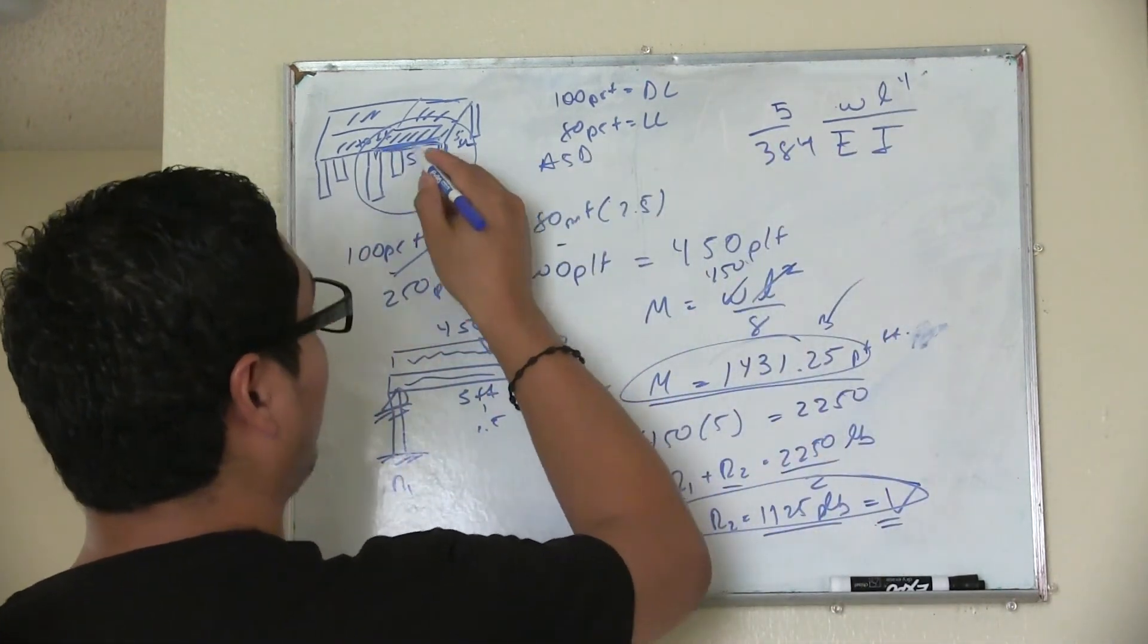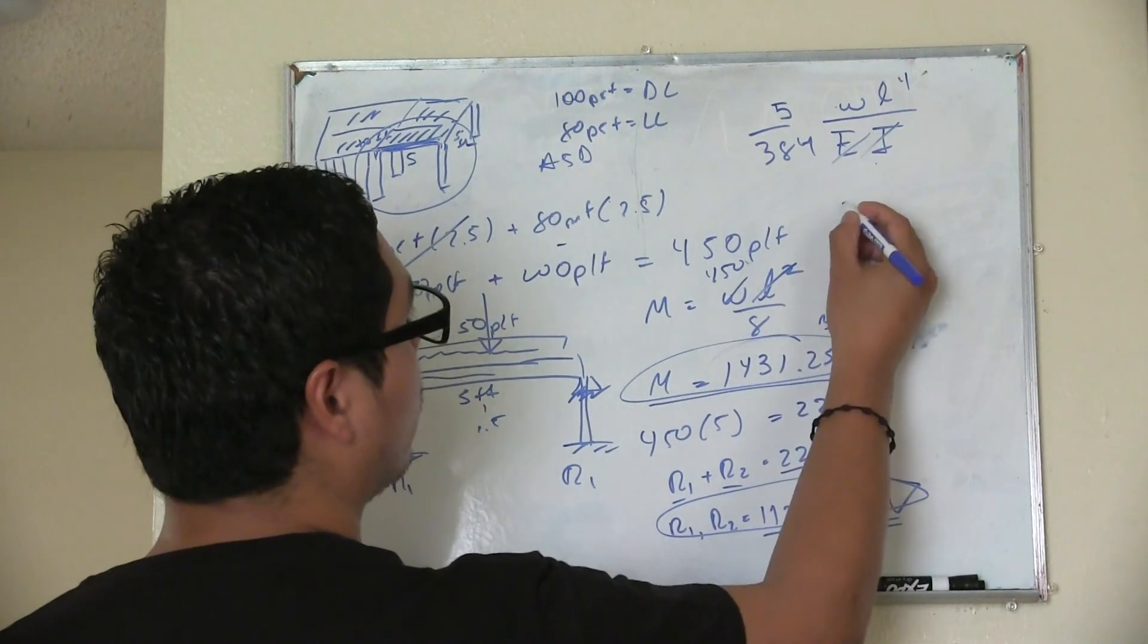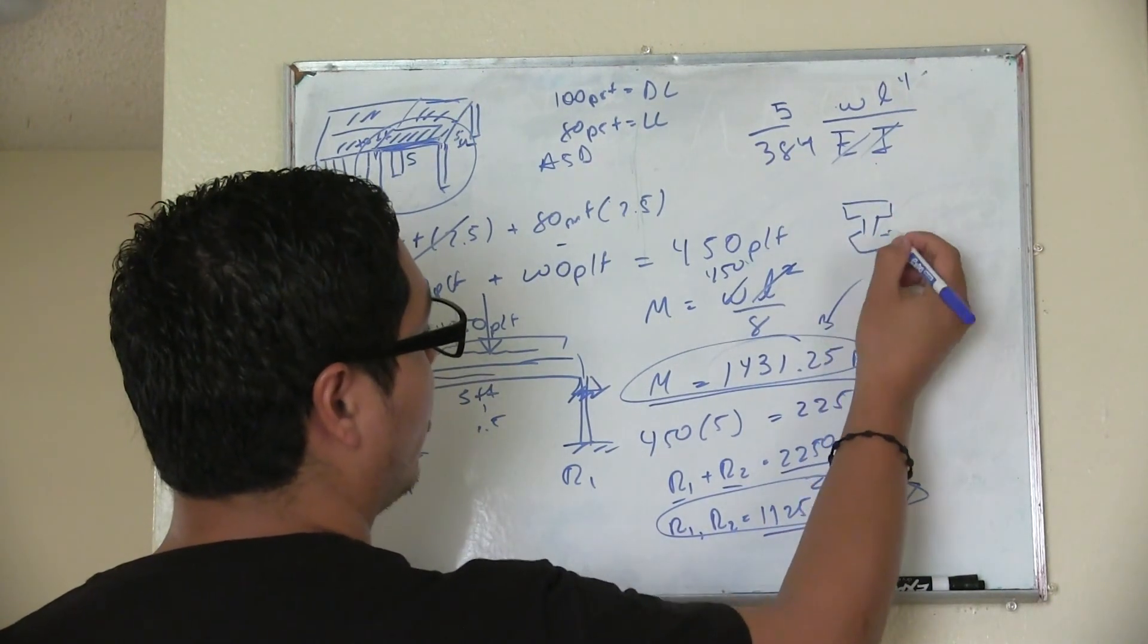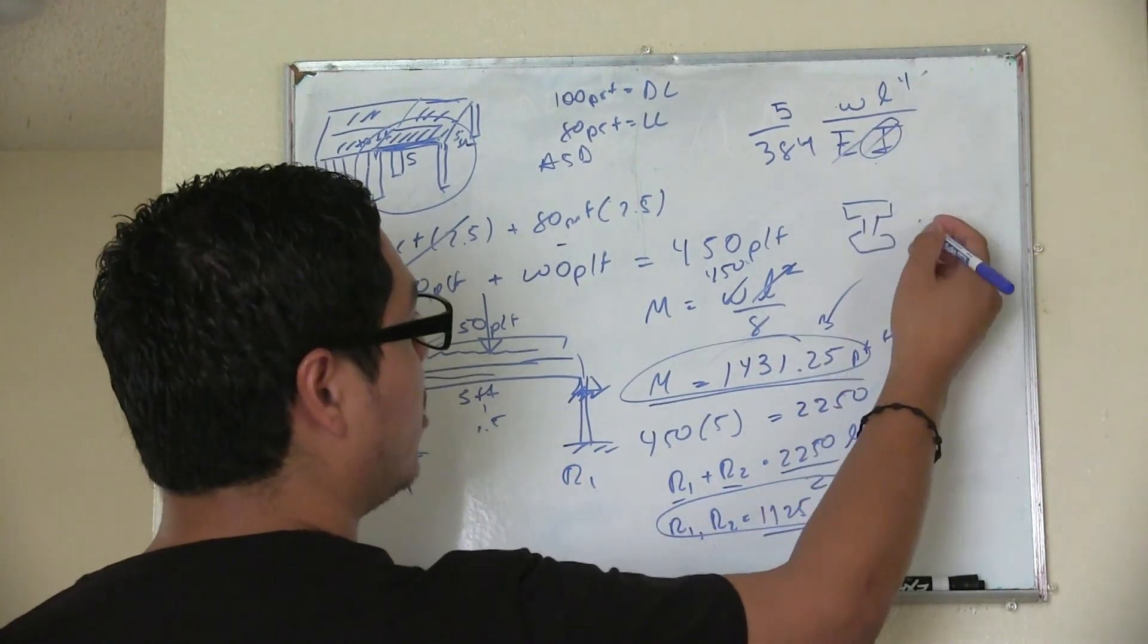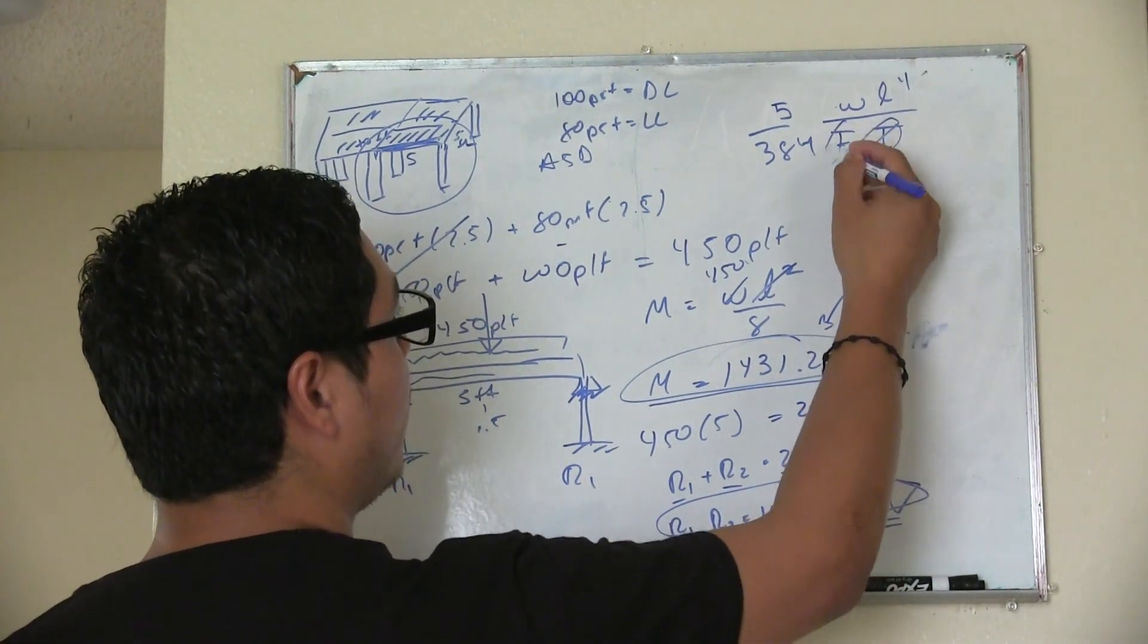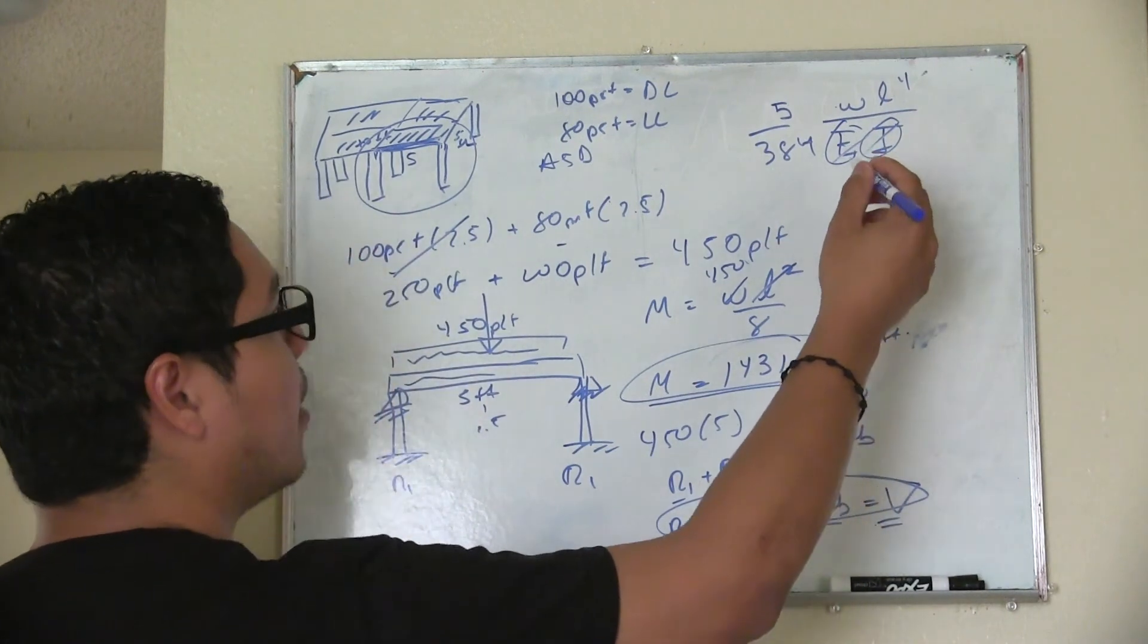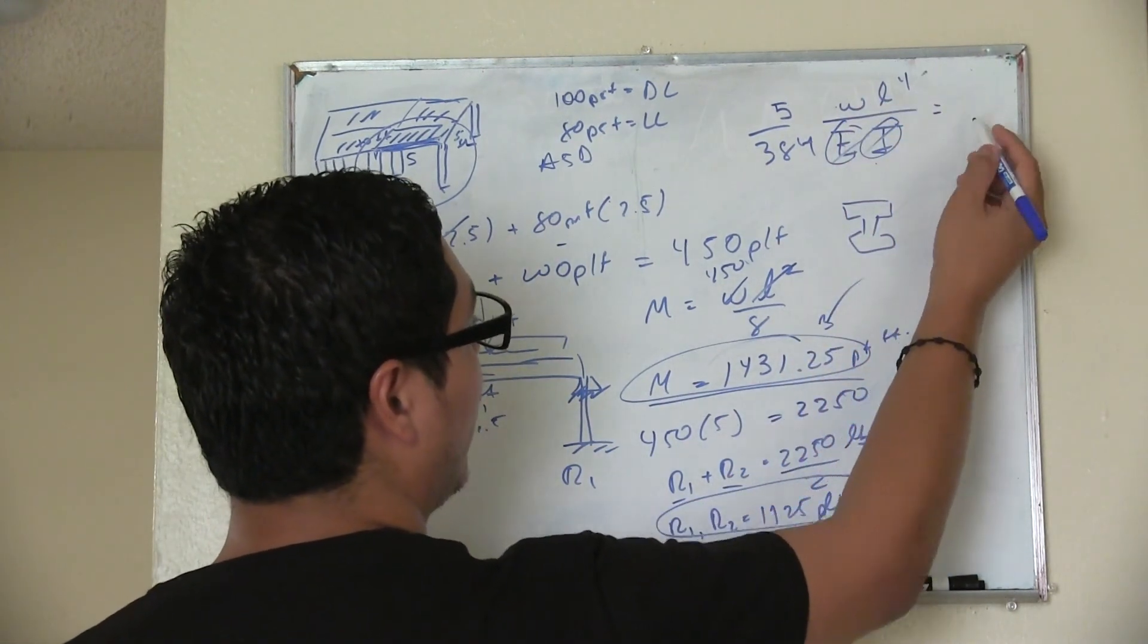You need to know what type of steel you're using. You need to know your cross section. So let's say you're using an I beam or whatever. You grab these values from, you can actually compute these values or you can grab them from the code. The same with the E value.